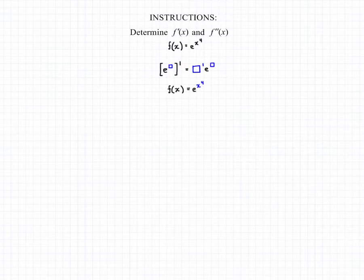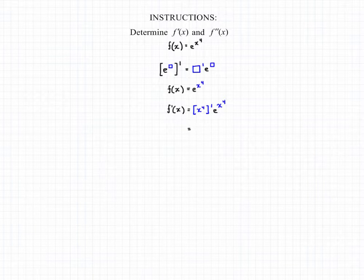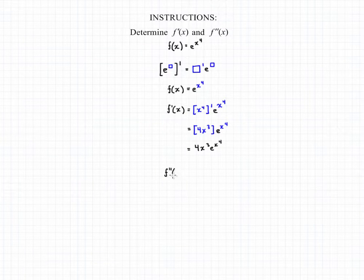Our function is e raised to x to the fourth. To take our derivative, we're going to take that x to the fourth, drop it down in front, take the derivative of it, and then multiply that by our original function e raised to x to the fourth. This gives us 4x cubed times e raised to x to the fourth. Our first derivative is equal to 4x cubed times e raised to x to the fourth.